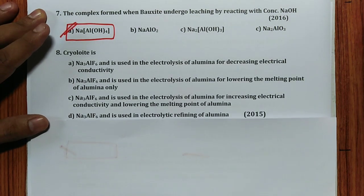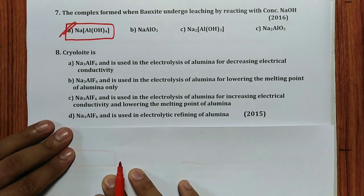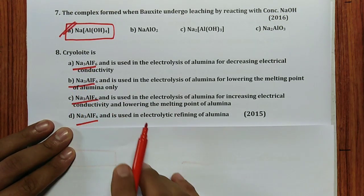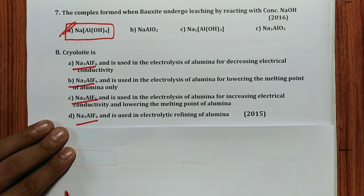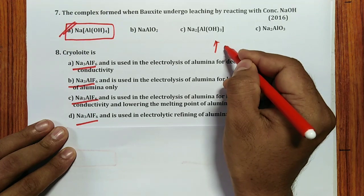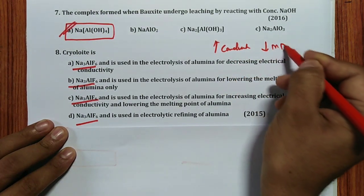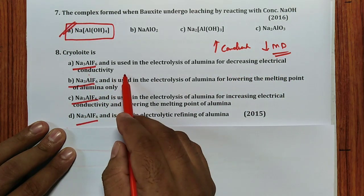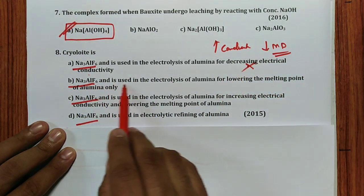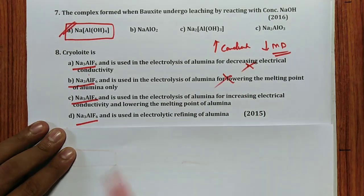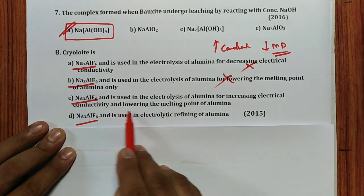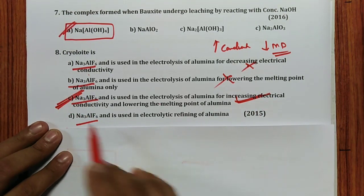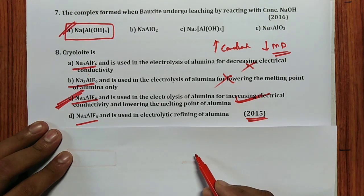Question 8 (2015): Cryolite — its formula is Na₃AlF₆. More importantly, remember its use: cryolite is used in electrolysis of aluminium to increase electrical conductivity and lower the melting point. Option saying only 'decrease conductivity' is wrong; option saying only 'lowering melting point' is wrong. The correct answer is: used in electrolysis of aluminium for increasing electric conductivity and lowering the melting point.